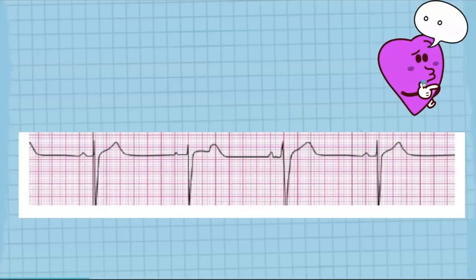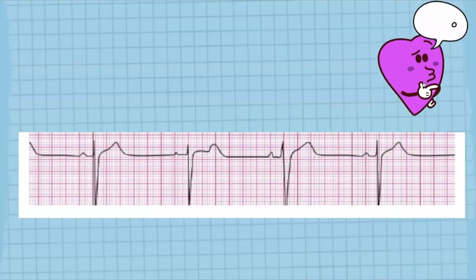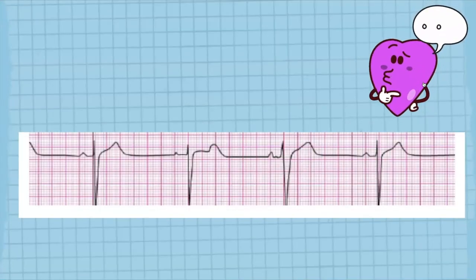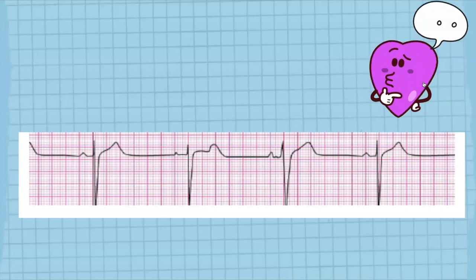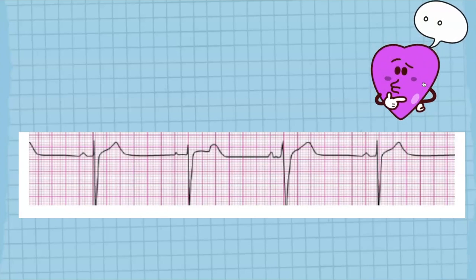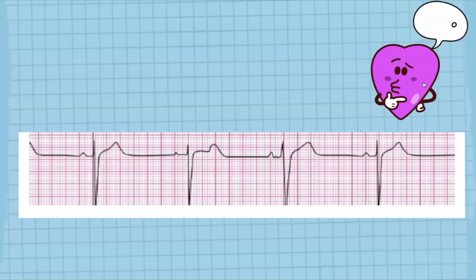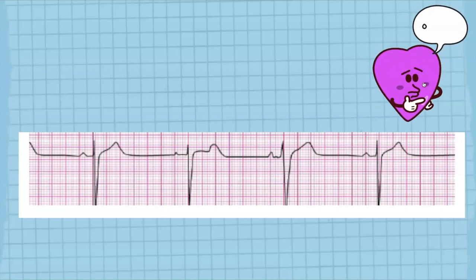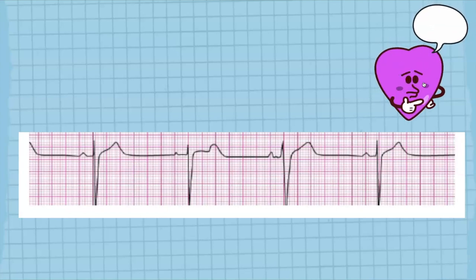So just as a recap, there's a five-step approach to reading an ECG. You always want to look at: what is the heart rate? What's the rhythm? What's the P wave doing? What's the PR interval? And what do the QRS complexes look like?